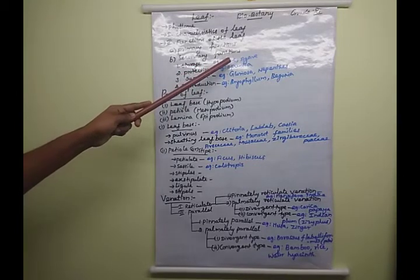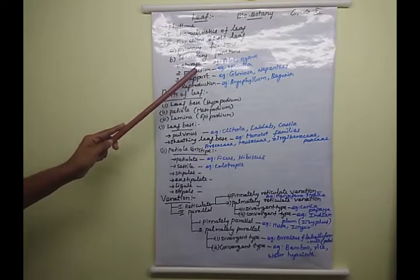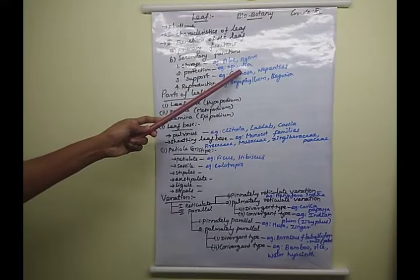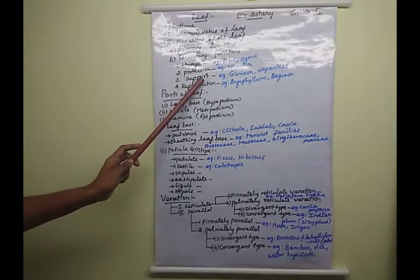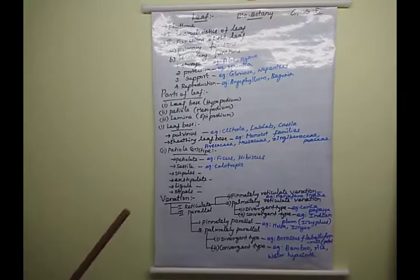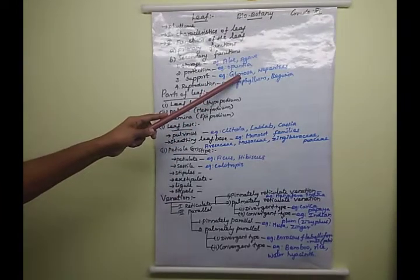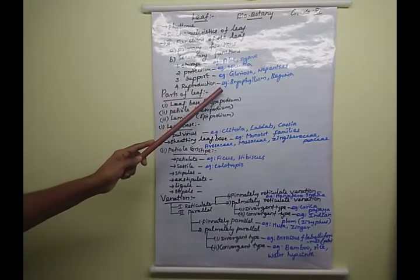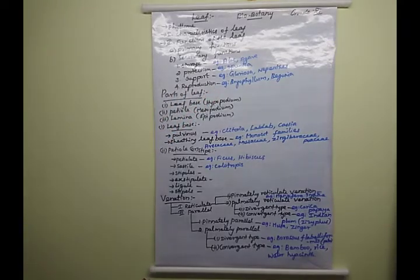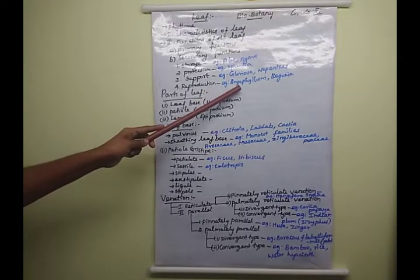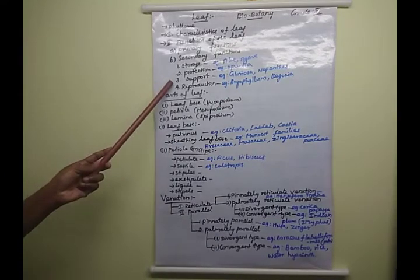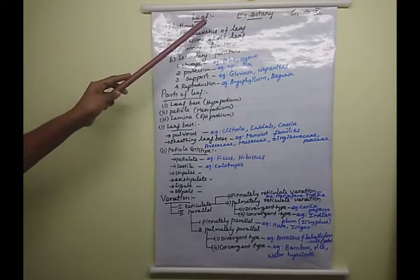For storage, examples are aloe and agave species. For protection, the species name is Opuntia. For supporting function — the leaf gives additional support — examples are Glorisa, Nepenthes. For reproduction, the leaf produces new buds; examples are Bryophyllum and Begonia. These are the secondary functions of the leaf.